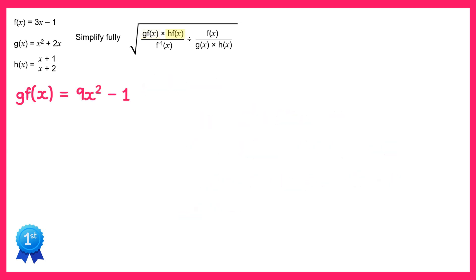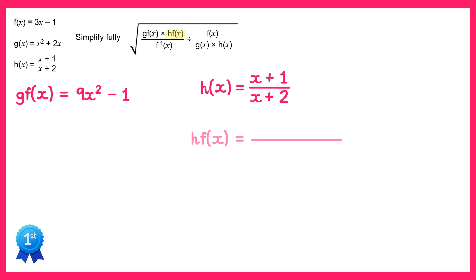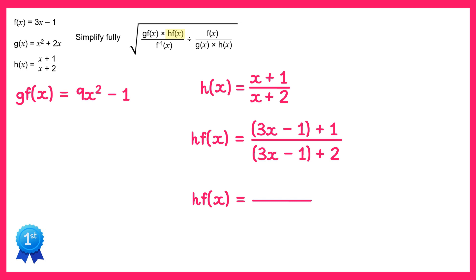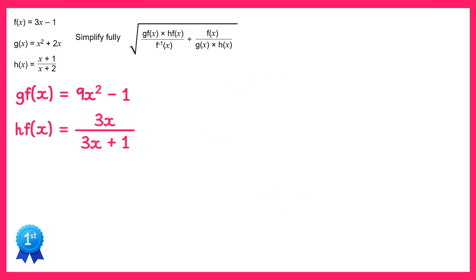Now we'll move on to hf of x. We're given h of x in the question — it's x plus 1 over x plus 2. We need to replace the x's again with the f function, so 3x minus 1. We'll have hf of x: on the top, x plus 1 becomes 3x minus 1 plus 1, and on the bottom, x plus 2 becomes 3x minus 1 plus 2. This simplifies to 3x on top and 3x plus 1 on the bottom. So hf of x equals 3x over 3x plus 1.